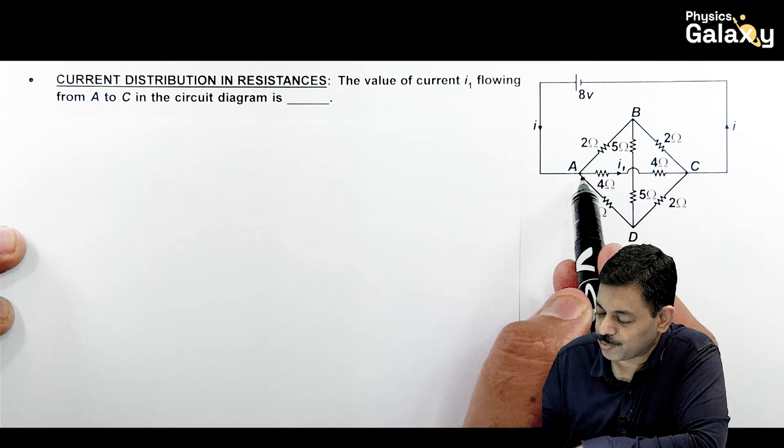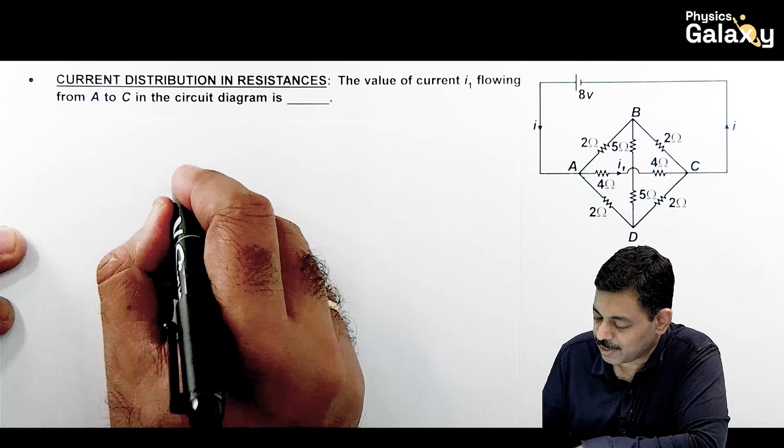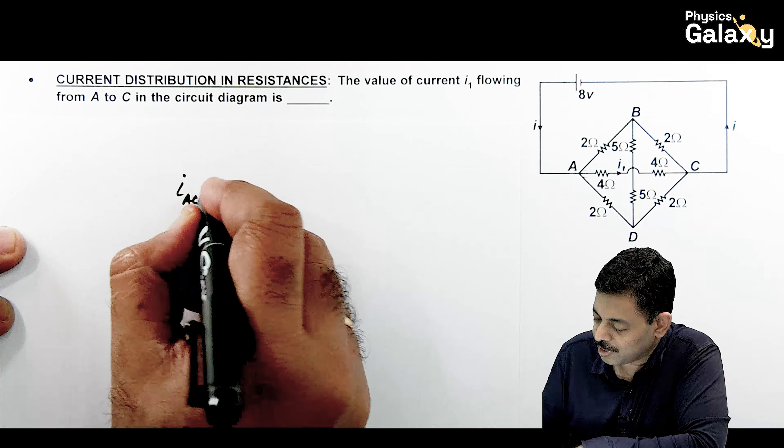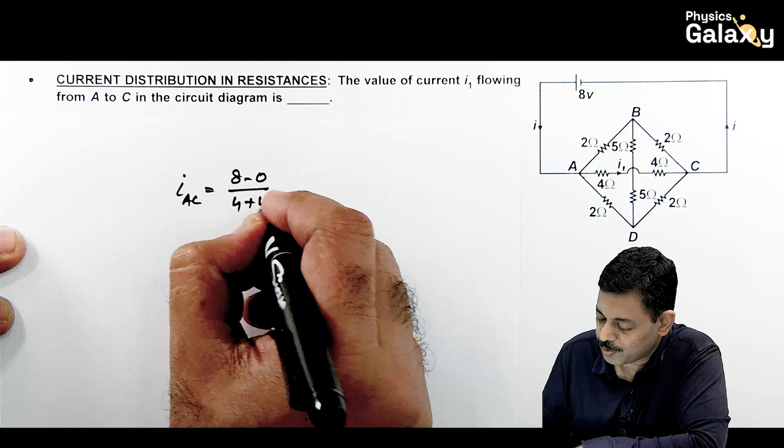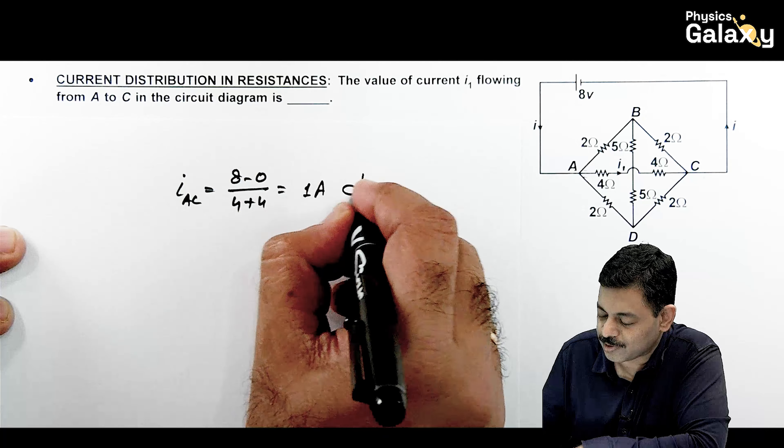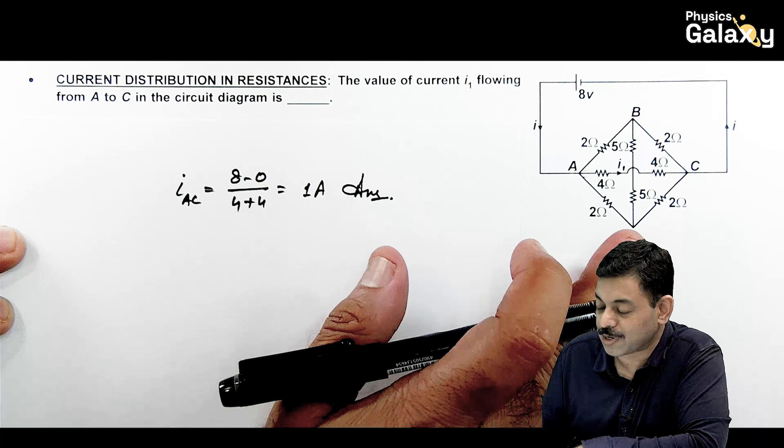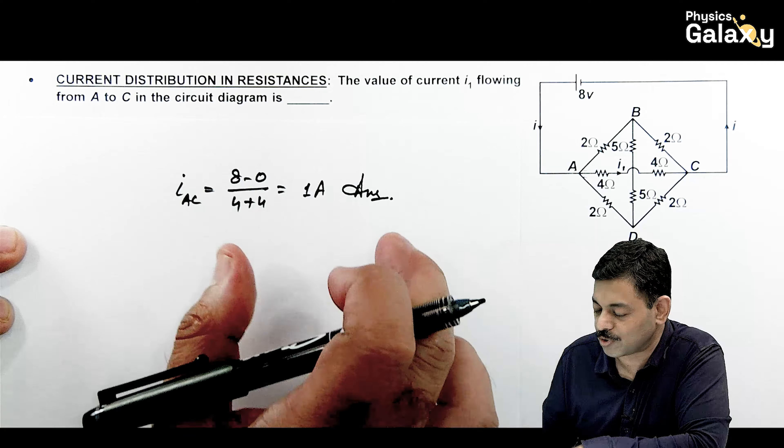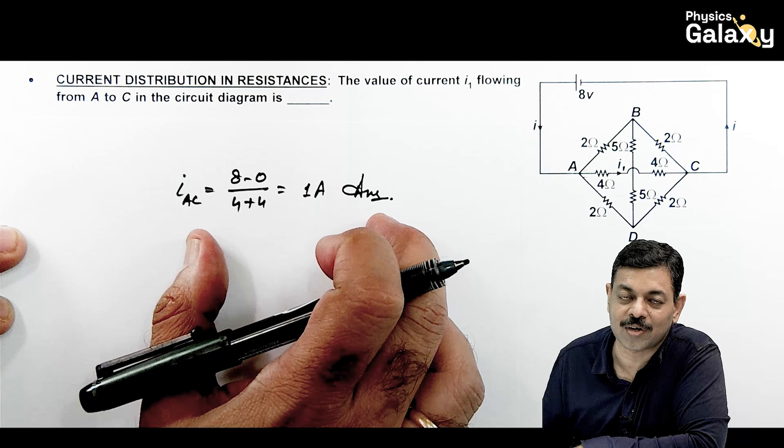If we take the right side potential to be 0 volt, on the left side it is 8 volts. A and C is a jumper, so there is total 8 ohm resistance connected between A and C. So you can calculate directly current from A to C. It is 8 minus 0 divided by 4 plus 4. This comes out to be 1 ampere.